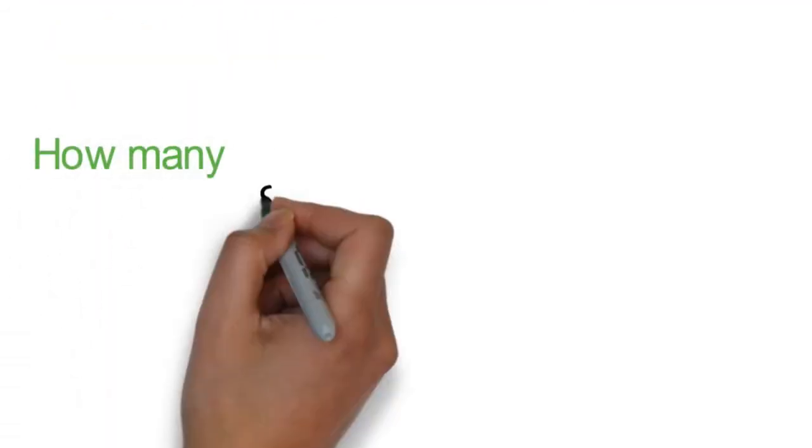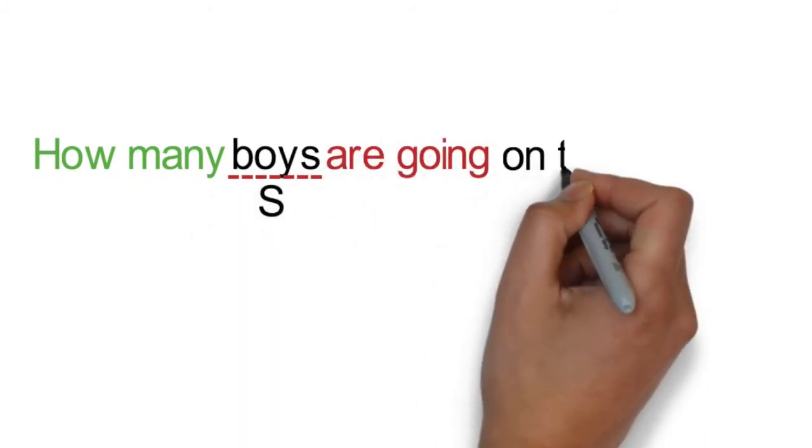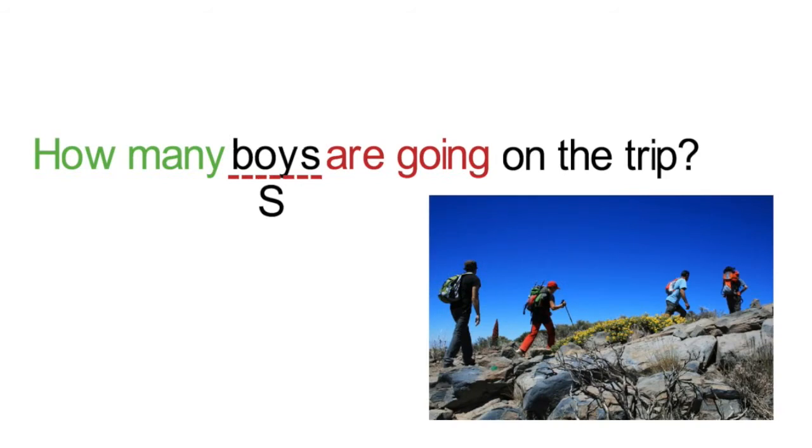How many has the subject after it, like this: How many boys are going on the trip? How many is usually followed by the subject, and then the present continuous verb. In this case, are is the correct form of to be, since the subject boys is plural.